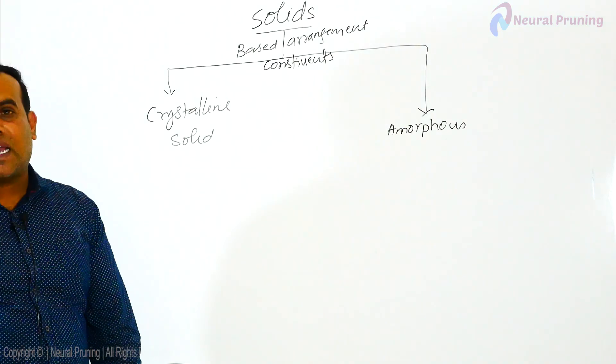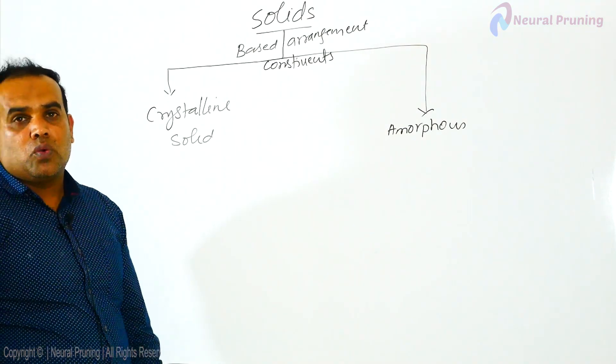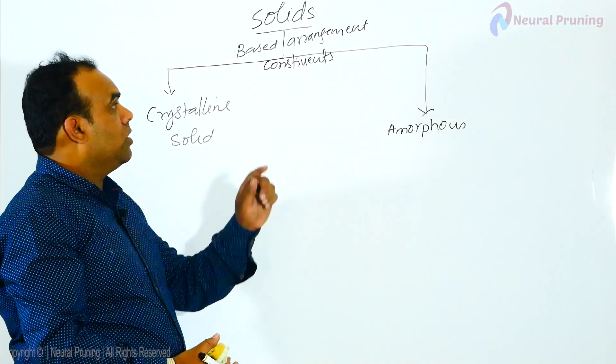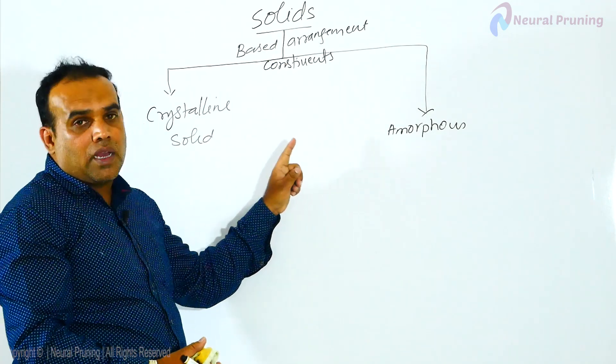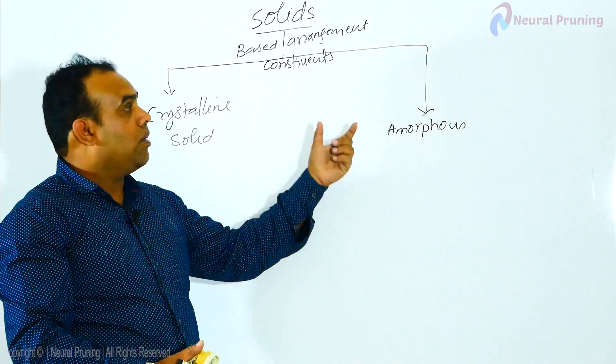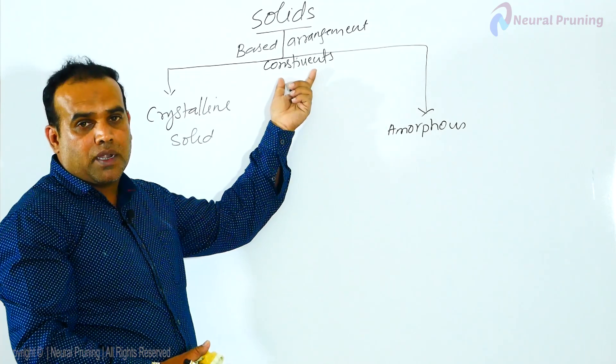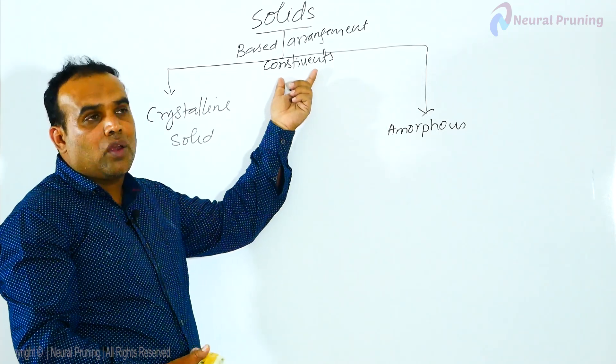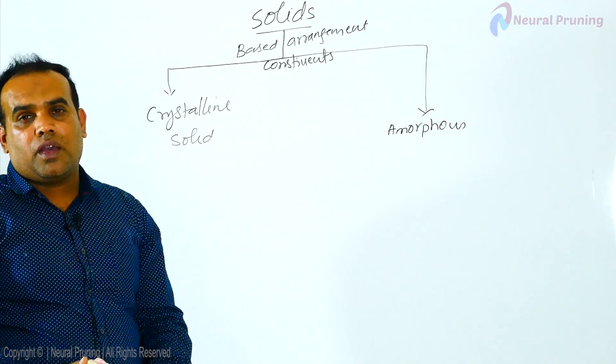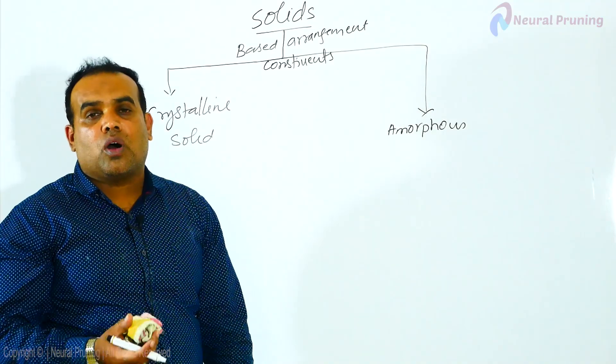Solids are broadly classified into two types: Crystalline solid and amorphous, based on the arrangement of constituent particles. Constituent particles may be atoms, ions, or molecules.